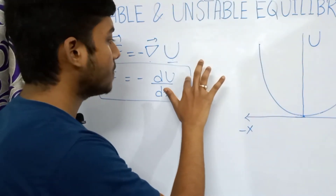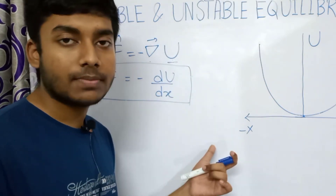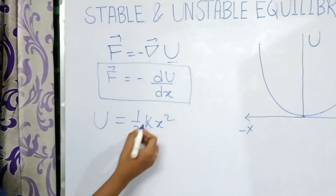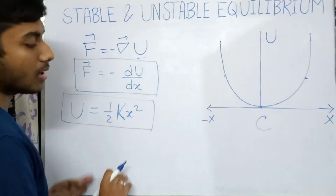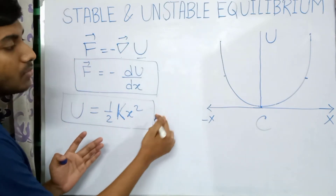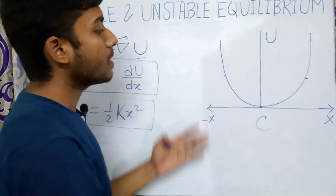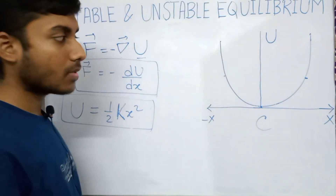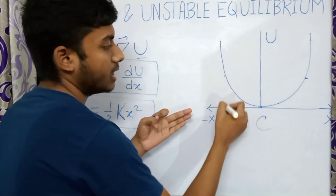Suppose we are considering the simple harmonic oscillator. We know that for a simple harmonic oscillator the potential energy U can be expressed as half kx squared. If we plot the x versus U graph for a simple harmonic oscillator using this equation, the graph will be a parabola since U is proportional to x squared. So the graph will be a parabola, with x on the horizontal axis and potential energy U on the vertical axis. This is the potential energy curve, and for various points of the x-axis there is a corresponding potential energy.